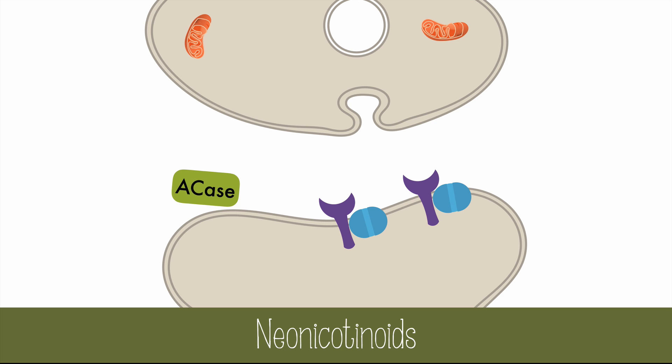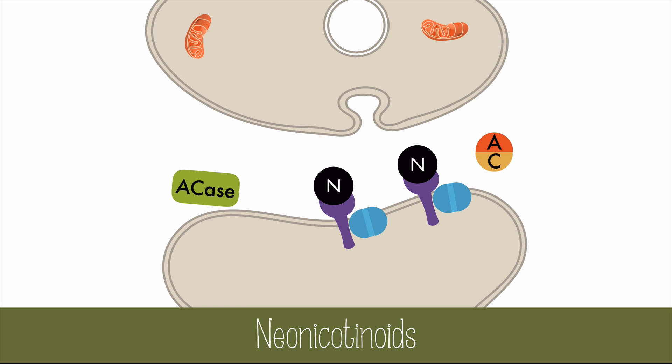One type of insecticide takes advantage of the acetylcholine receptors to paralyze and kill insects. Neonicotinoids are synthetic compounds similar to nicotine that bind permanently to the acetylcholine receptors. Acetylcholinesterase cannot break the neonicotinoids down, and the neurons can no longer receive messages or send action potentials, leading to paralysis and death of the insects. The effects are very small in humans and mammals, but neonicotinoids don't discriminate between types of insects — honeybees and other beneficial insects are inadvertently killed by neonicotinoids too.